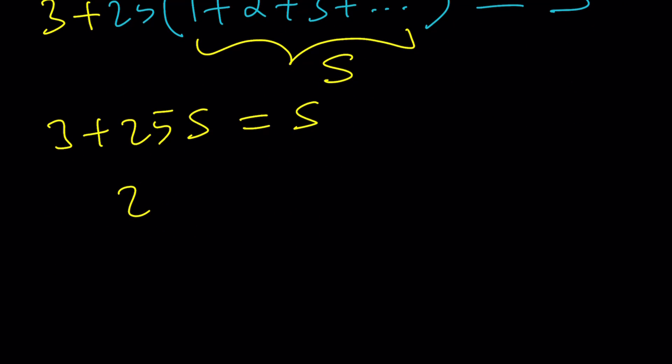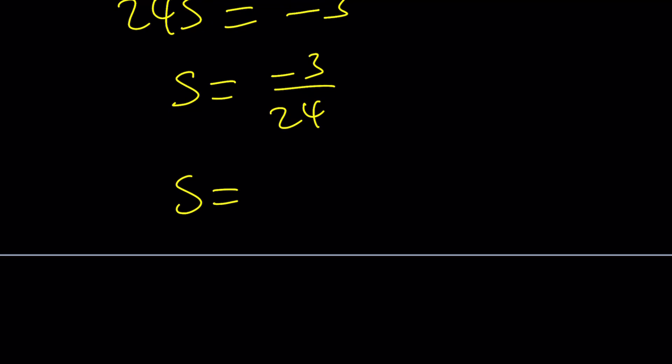Subtract S from both sides. 24 S equals negative 3. You've got to bring the 3 over to the right. And then S is equal to negative 3 over 24. But that's the same thing as negative 1 over 8.